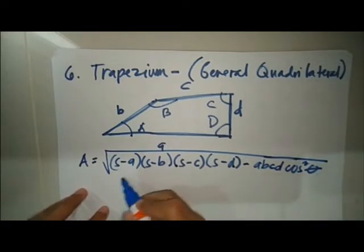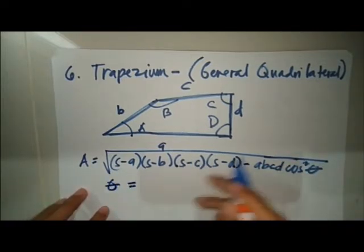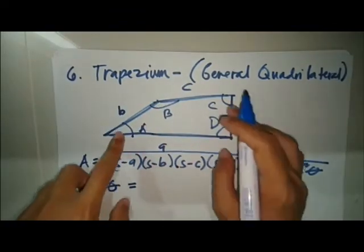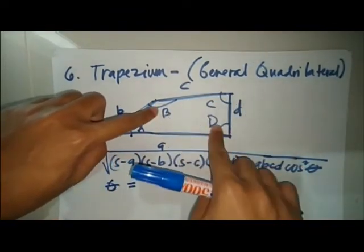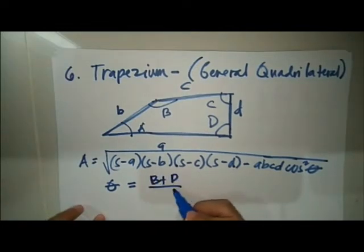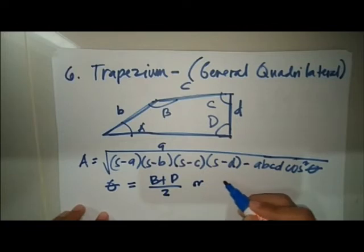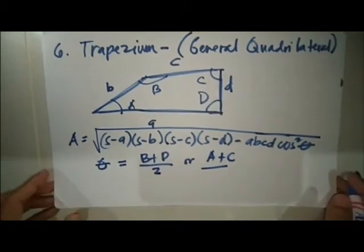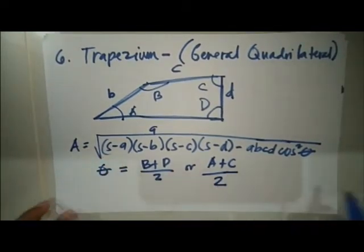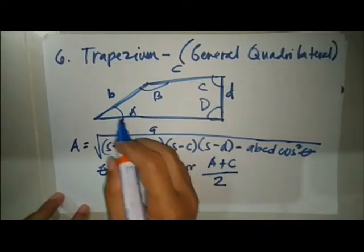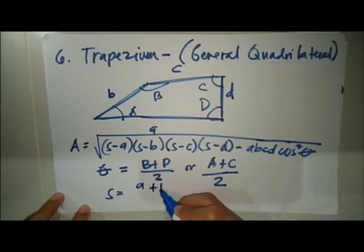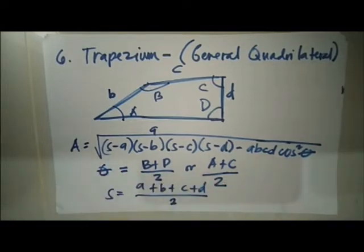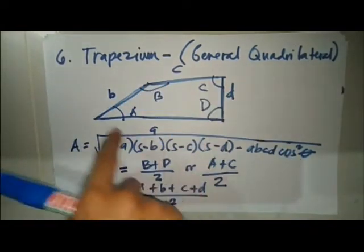Here, theta is one half of the sum of a pair of opposite angles — for example, (B plus D) over 2, or (A plus C) over 2. The value S is the semi-perimeter: (A plus B plus C plus D) over 2. The computation is straightforward as long as you have the sides and opposite angles. If the diagonals d1 and d2 are given instead, the area is one half times d1 times d2 times sine theta, where theta is the angle between the diagonals.